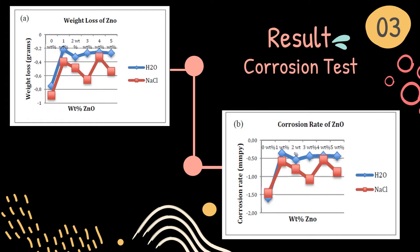We will now explore the result section. This section will discuss the corrosion rate of mild steel in different media using the weight loss method. Both weight loss and corrosion rate depend on certain physical and chemical factors. As we can see here, there are two graphs: the first graph is about the weight loss of zinc oxide, and the other one is the corrosion rate of zinc oxide using the corrosion test.